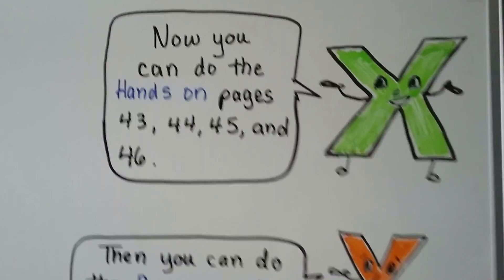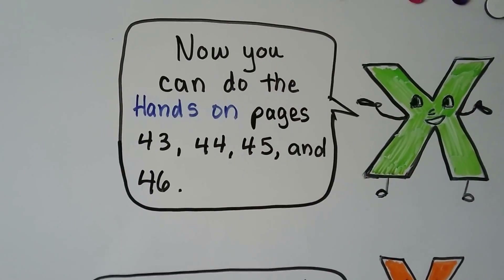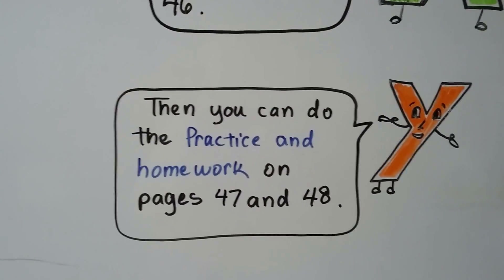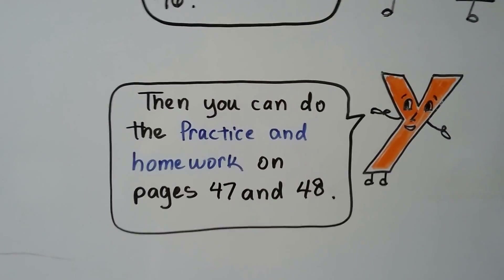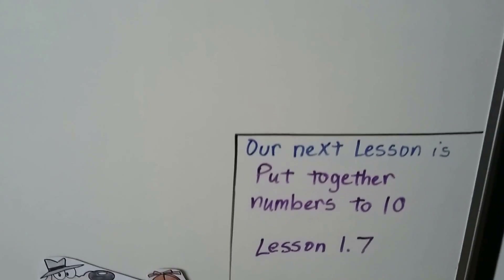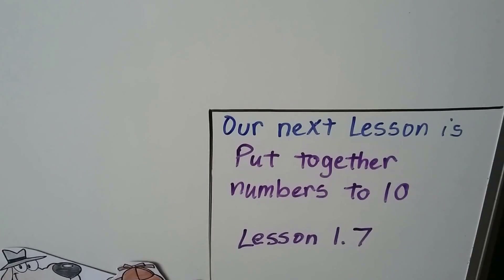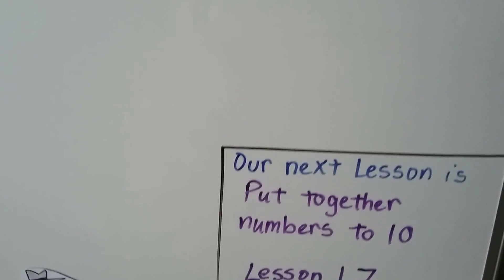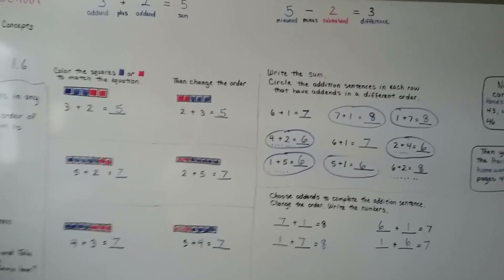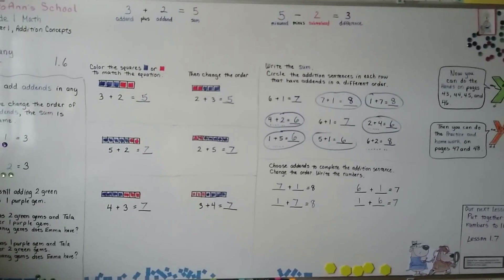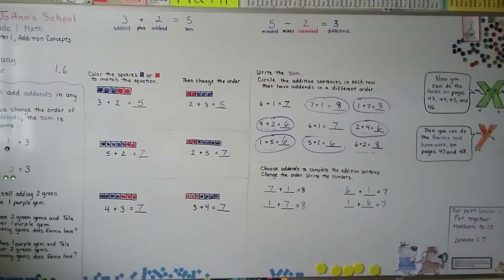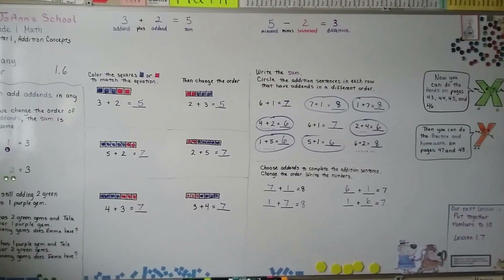Now you can do the hands-on on pages 43, 44, 45, and 46. When you're finished with that, you can do the practice and homework on pages 47 and 48. If you have trouble, try watching the video again. Our next lesson is put together numbers to 10 — that'll be lesson 1.7. I hope this video was helpful. Read the questions and problems carefully. I hope you do well, and I'll see you next video.